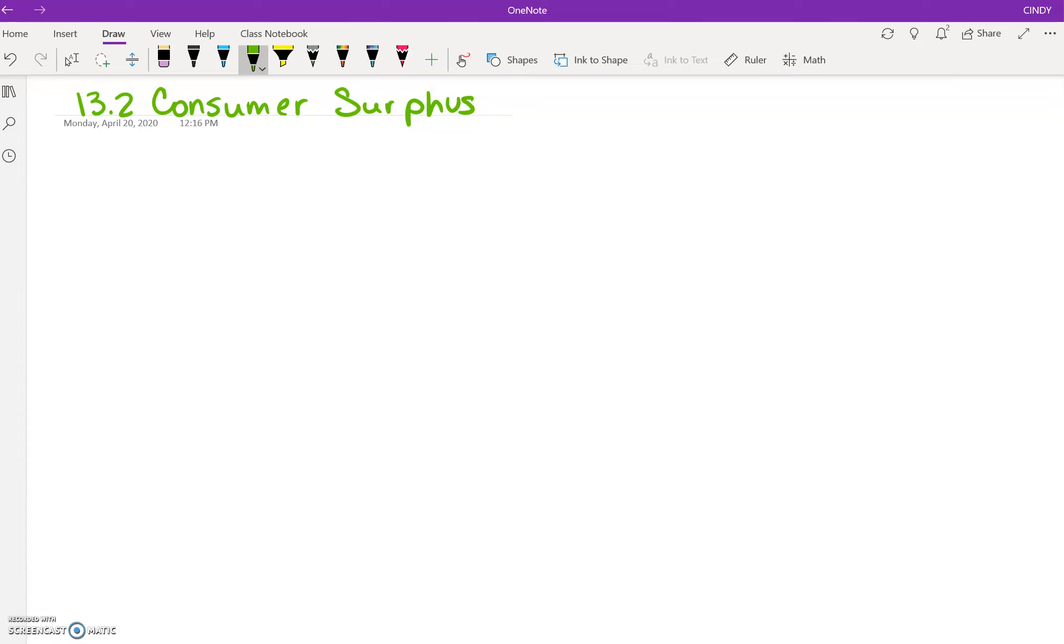Okay, in 13.2, which is the last section, we're talking about consumer surplus. So, a definition. If you have x with a bar over it, p with a bar over it, and it's a point on the graph...